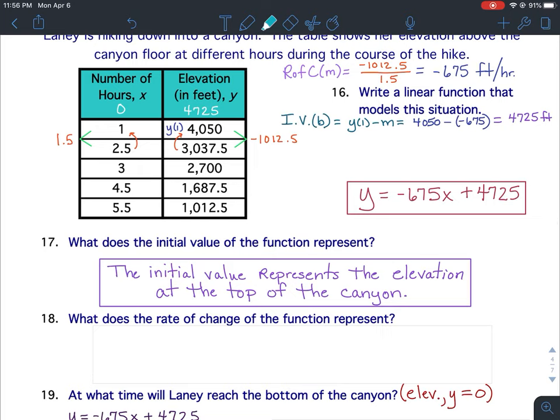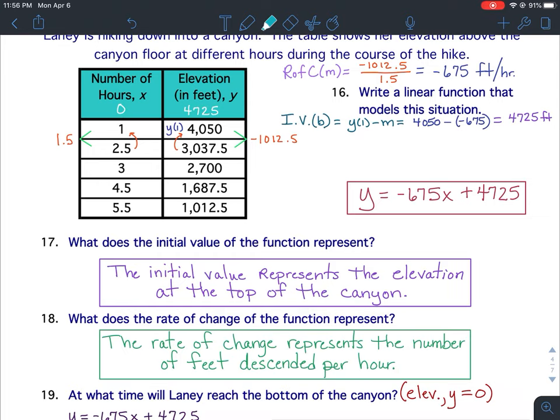What does the rate of change of the function represent? What does that negative 675 feet per hour represent? That's the number of feet Laney is descending per hour. So the rate of change represents the number of feet descended per hour. Take a moment, pause the video, and get all that written down.